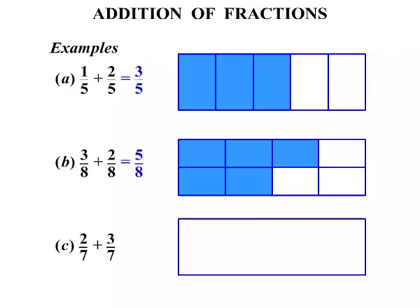2 sevenths plus 3 sevenths. Let's draw a diagram. We're dealing with sevenths. Let's break this up into sevenths. We have 2 sevenths to start with, and then we have another 3 sevenths.